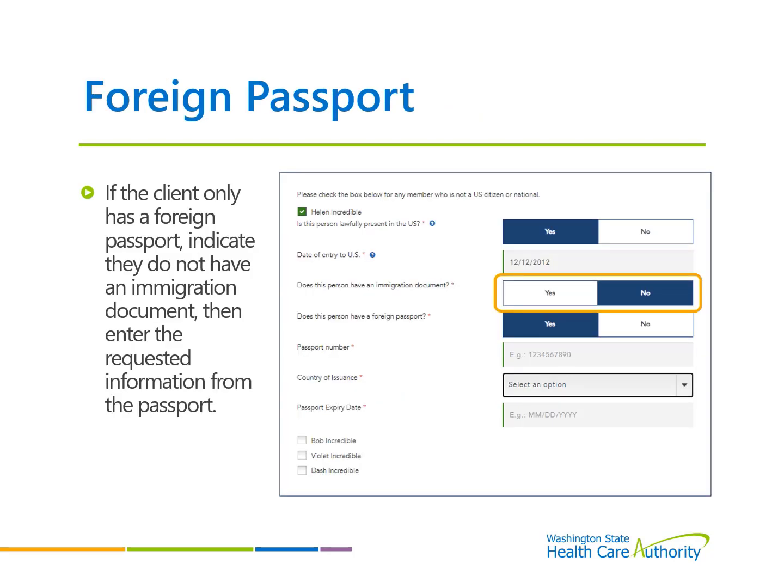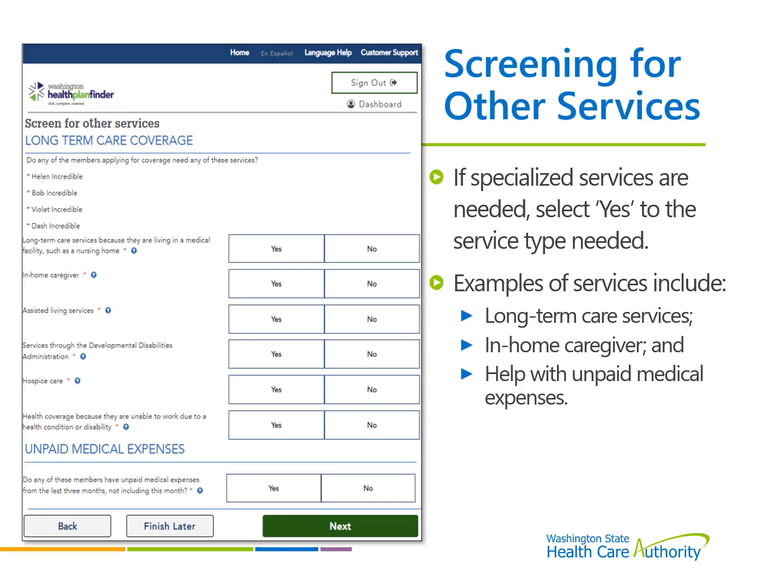If the client only has a foreign passport, indicate they do not have an immigrant document. This then provides the option to enter information from the passport, which is the passport number, country of issuance, and the passport expiration date. If a household member seeking coverage needs other services, indicate yes for each service needed.